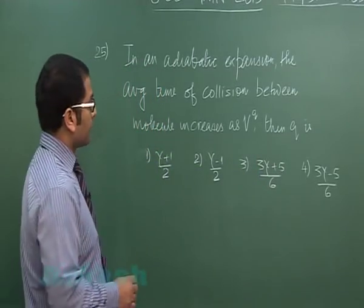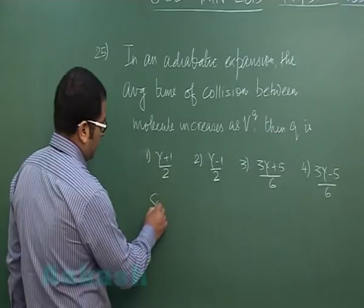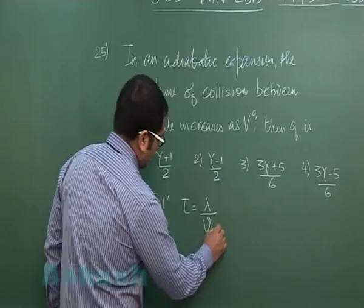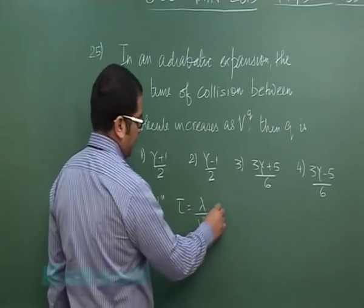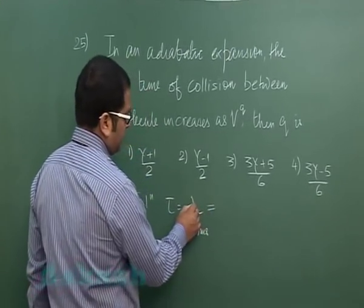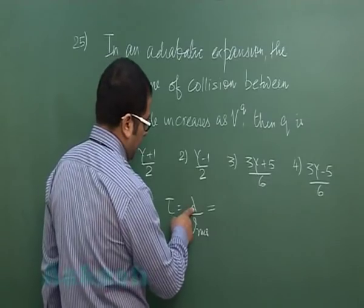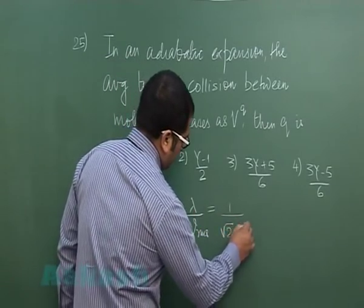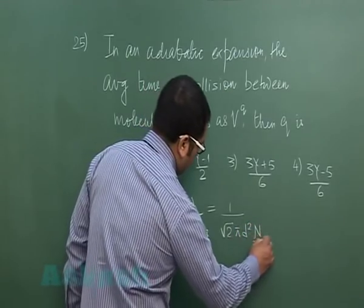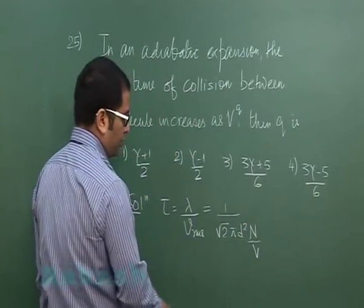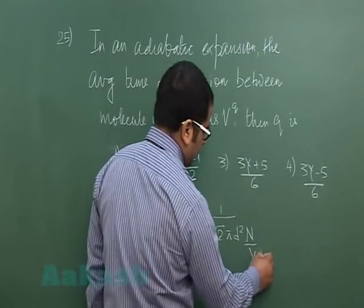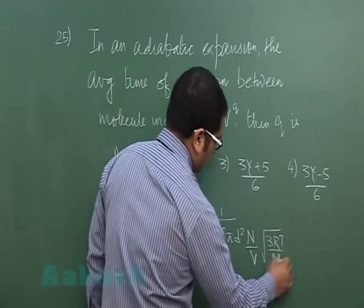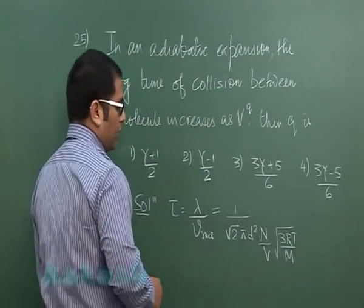We know the relaxation time is the mean free path by the rms speed. And this particular lambda, that is 1 by root 2 pi d squared n by V, the number of molecules per unit volume. And V_rms of course is root 3RT by m.